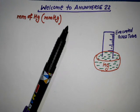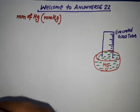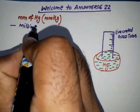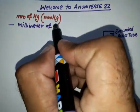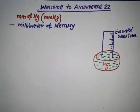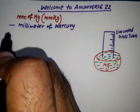Hello friends, welcome to Anuniverse 22. In this video we will discuss what is mm of mercury. Mm of mercury is called millimeter of mercury.